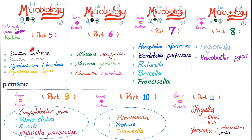Video number 5: Bacillus anthracis and Bacillus cereus, as well as Mycobacterium leprae and Mycobacterium tuberculosis. In video number 6, we talked about Neisseria meningitidis, Neisseria gonorrhoeae, and Moraxella catarrhalis. Video number 7: Haemophilus influenzae, Bordetella pertussis, Pasteurella, Brucella, and Francisella. Video number 8: Legionella and H. pylori.